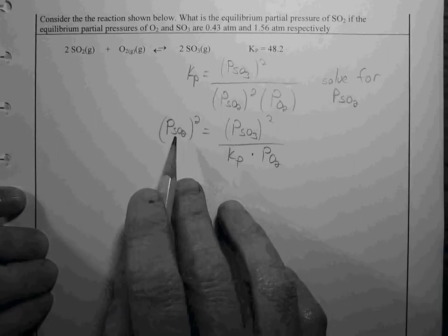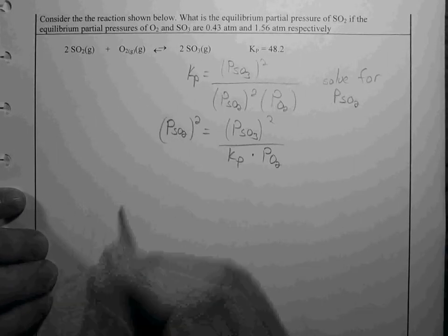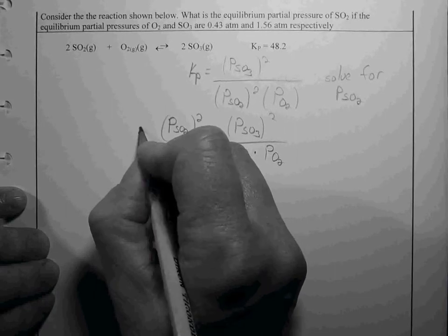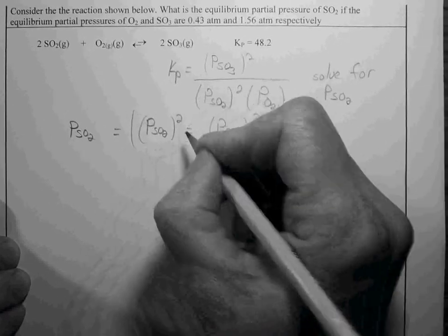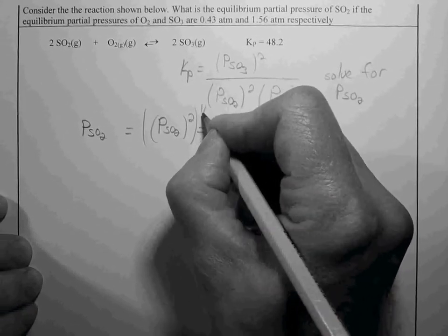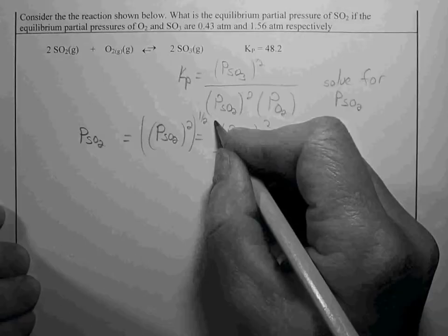This is the partial pressure of SO2 squared. To get the partial pressure of SO2, we need to take the square root of that whole expression.